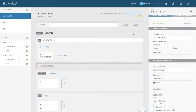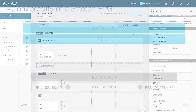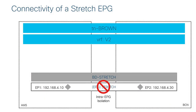Now let's make a minor change. I'm still working with EPG Stretch, but I'm going to enable a security feature called intra-EPG isolation. A quick review: the default behavior of ACI is that if you belong to the same EPG, you're allowed to communicate without any contracts or filters. But by enabling intra-EPG isolation, I change that behavior — by turning it on, I'm telling ACI that even though endpoints belong to the same EPG, nobody can talk. It's similar to the concept of PVLAN.